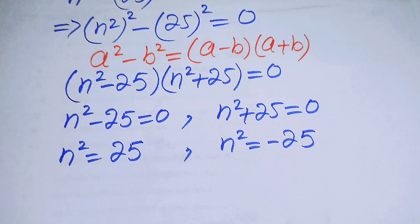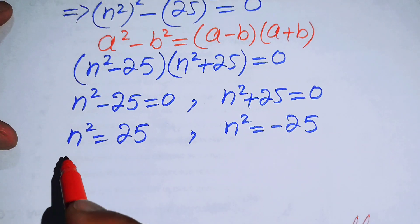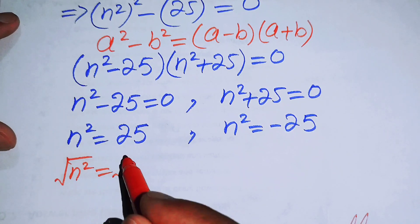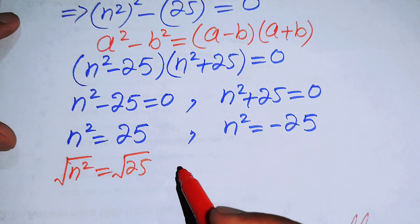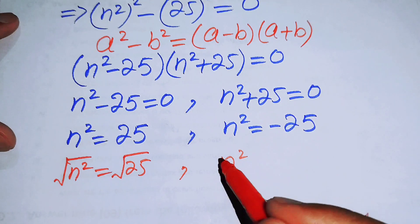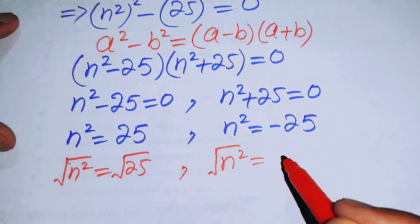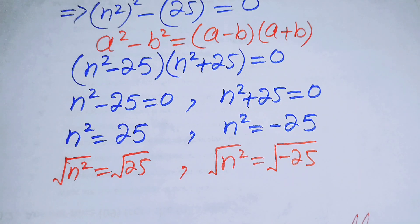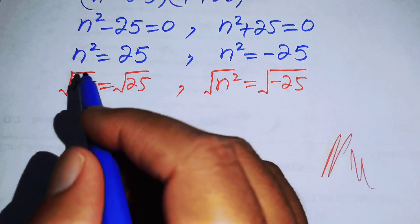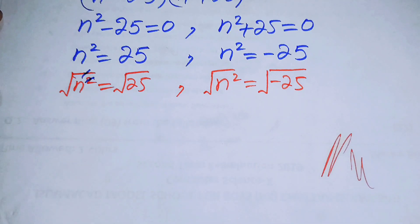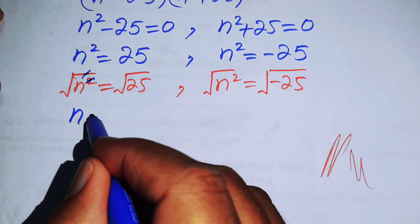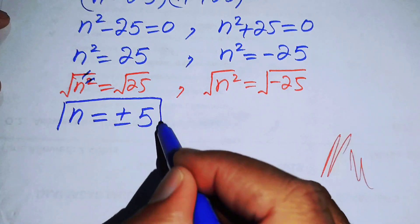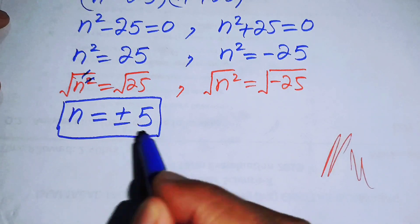In the next step we take the square root on both sides. The square root of n squared equals the square root of 25. The square and square root cancel each other, giving n equals plus or minus 5. So these are the first two real roots of the given equation.